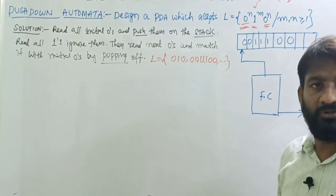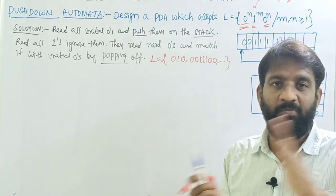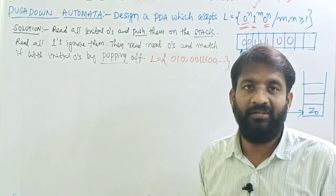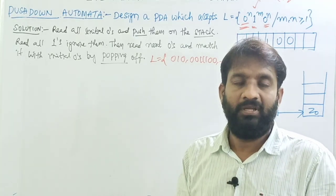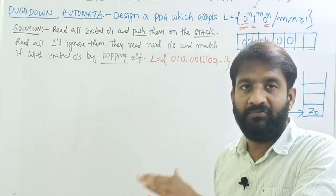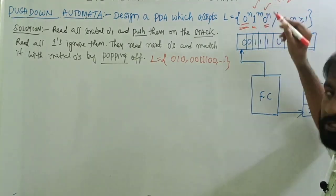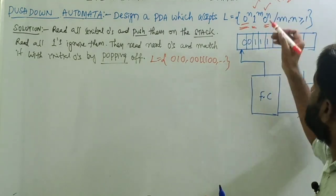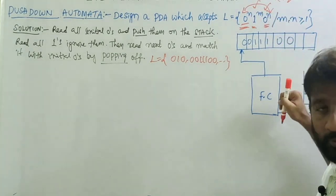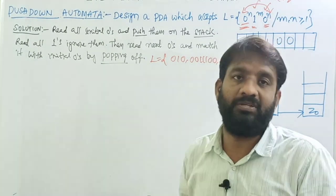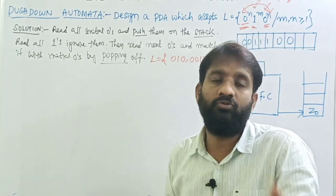The idea of the solution is: first, read all zeros and push them onto the stack. Then read all ones and just ignore them. After the ones are completed, the second set of zeros begins. Map the second zeros with the first initial zeros — those are already pushed onto the stack — and do the pop operation, so we can make the stack empty and move to the final state.